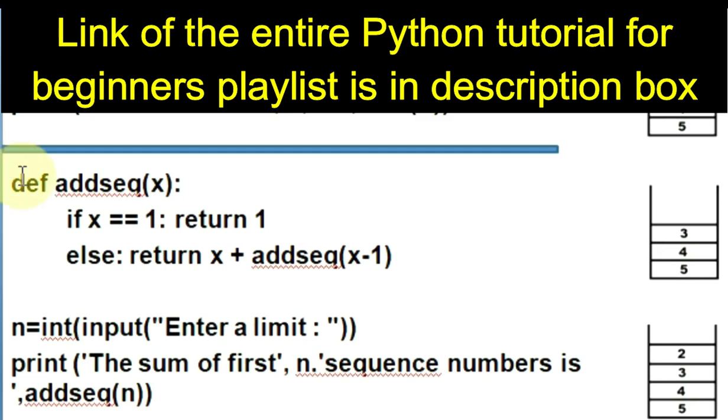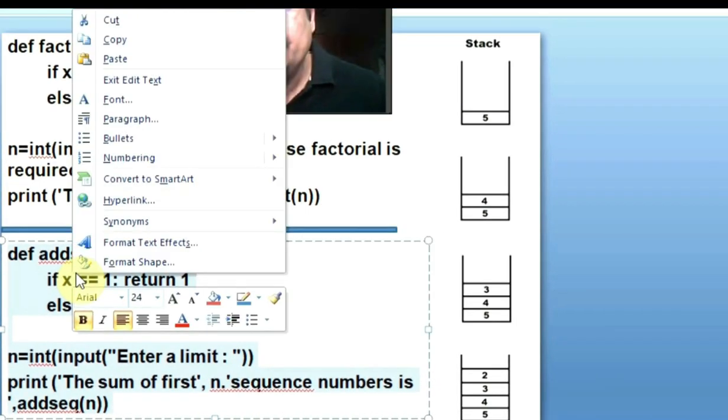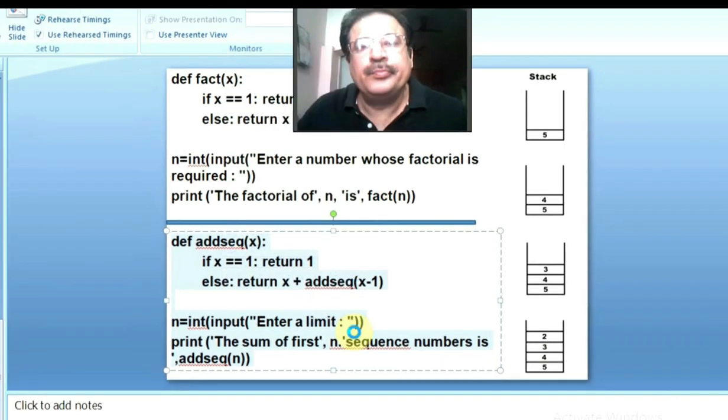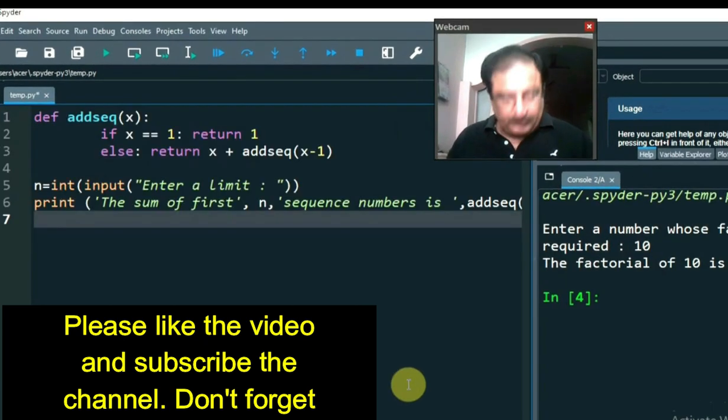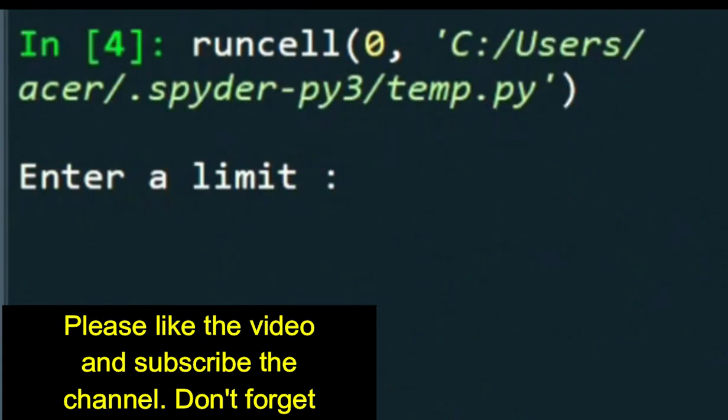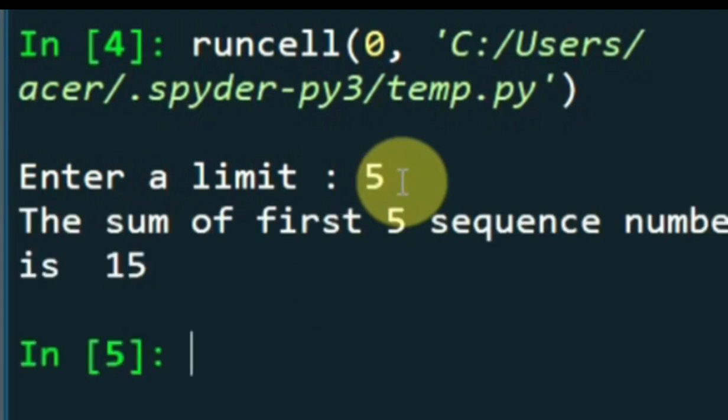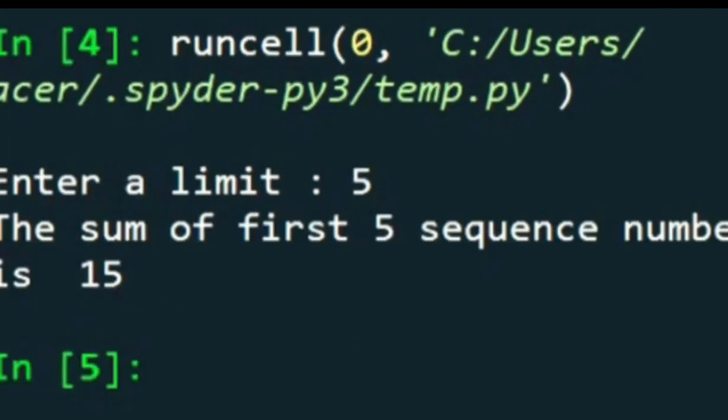Let us run this program also. I am running it. It is very easy. Enter limit. If I enter 5, the sum of first 5 sequence number is 15.